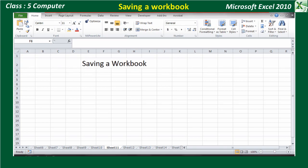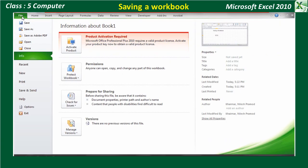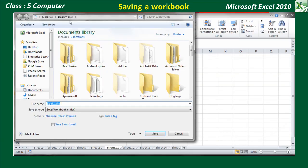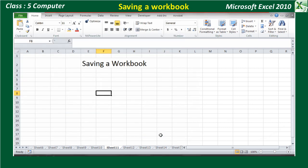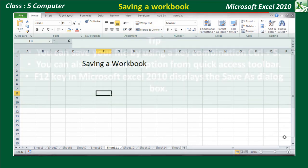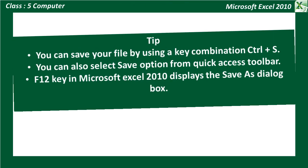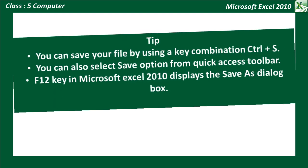Saving a workbook: To save a workbook, click on the File tab and select the Save As option. A Save dialog box appears. Enter the file name and click on the Save button. The file will be saved with the extension .xlsx. You can save your file using the keyboard shortcut. You can also select the Save button on the Quick Access Toolbar. The F12 key in Microsoft Excel 2010 displays the Save As dialog box.